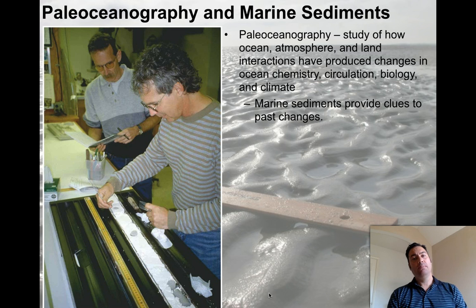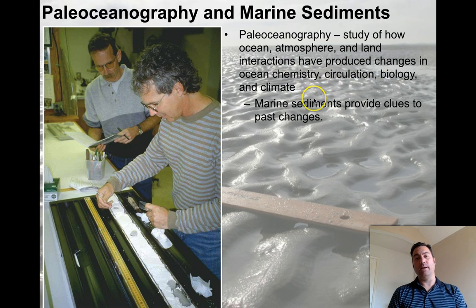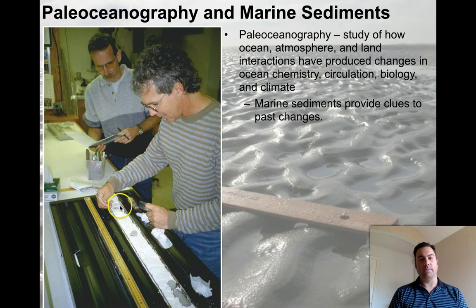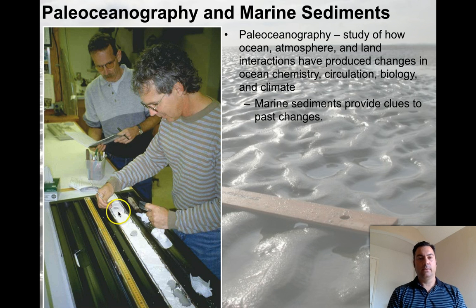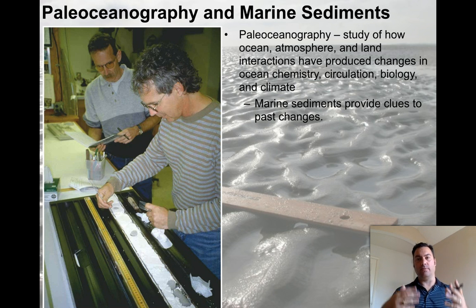Paleo oceanography and marine sediments — paleo oceanography is the study of how ocean, atmosphere, and land interactions have produced changes in ocean chemistry, circulation, biology, and climate. Marine sediments provide clues to these past changes. Here are two paleo oceanographers looking at a sediment core, just like the one pulled from the ocean I showed you earlier. They're examining what they can find about past clues in the oceans, and we'll talk about how we know what is going on as we go forward.